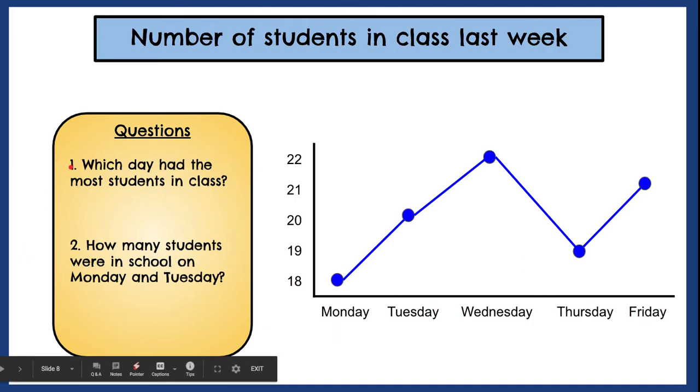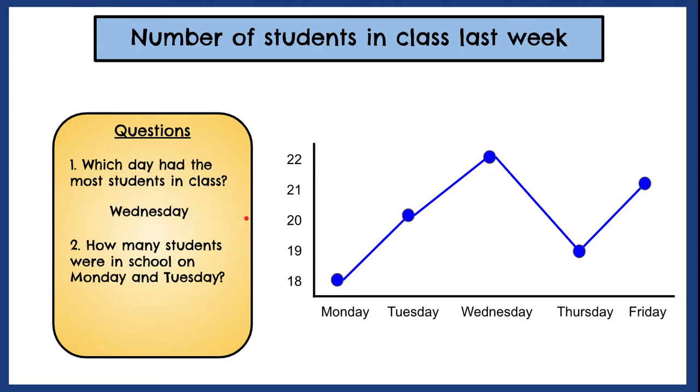The first question, which day had the most students in class? I will look at my line graph and I will find which day had the highest point. And here's the highest point. If I go down I see that it's Wednesday. So it looks like Wednesday had the most students in class.